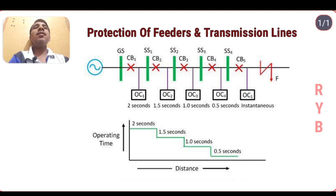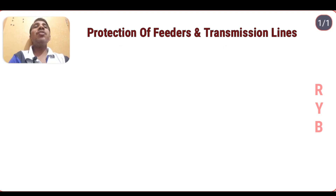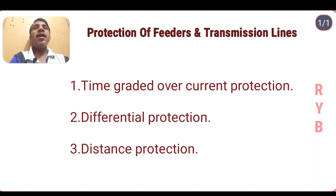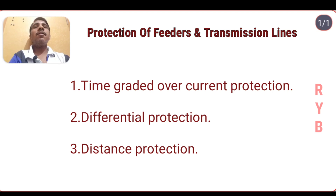The main three methods of transmission line and feeder protection are: first, time graded over-current protection; second, differential protection; and third, distance protection. Distance protection uses impedance relays.